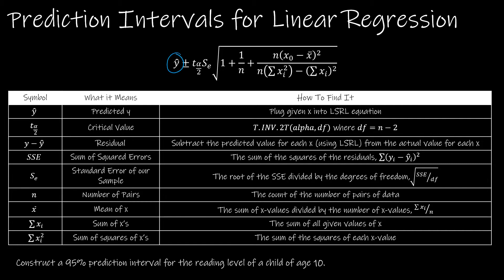The first one, moving left to right in the equation, is Y-hat, which still means predicted Y value. I plug whatever my given X is into the least squared regression line equation. We've already done that part — finding Y-hat, which is our point estimate. Then we have T of alpha over 2, which is our critical value. It's a two-tailed test, so the critical value is found using T inverse two-tail: alpha and degrees of freedom. Degrees of freedom for linear regression is N minus 2.